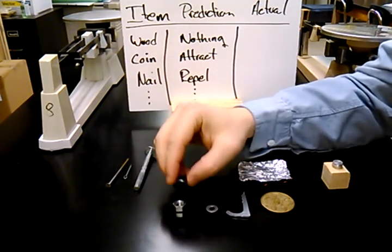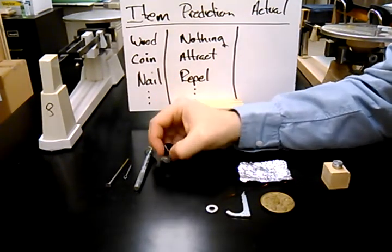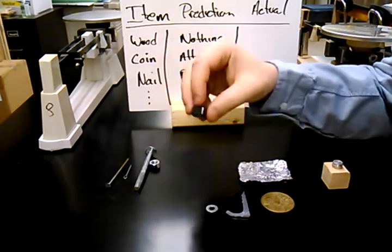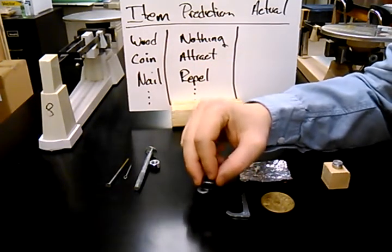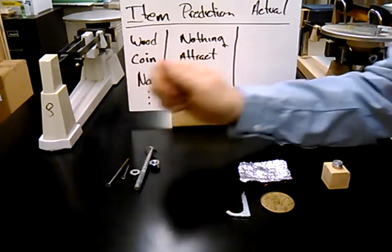Next, I have the nut. The nut is the same thing. It is attracted. Then I have a washer. The washer easily came up off the lab station table, so it too is attracted.